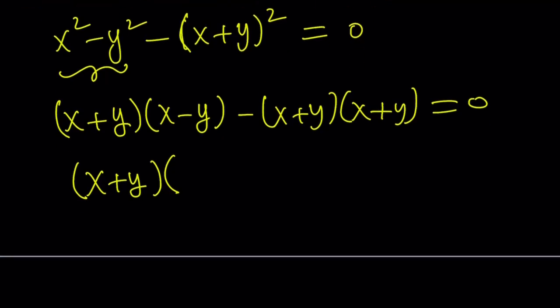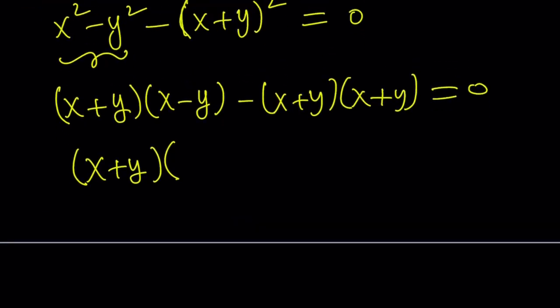And then inside, we have to write terms such that when we distribute and multiply by x plus y, we should get the original expression. So inside I have to have x minus y minus, since I have the x plus y on the outside, I just need to write x plus y, but that needs to be in parentheses because it's going to be negated. There's a minus sign here.